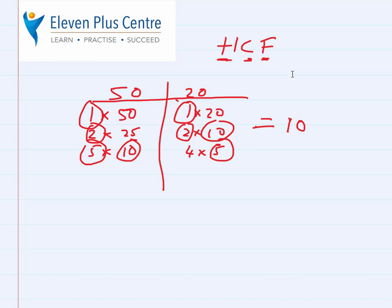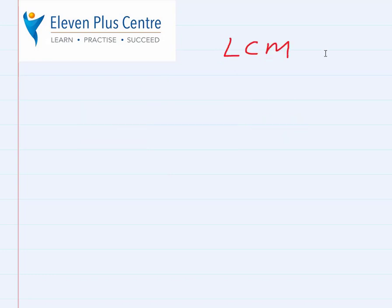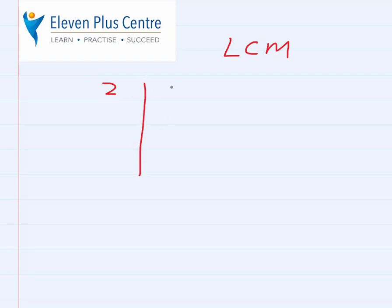Okay, that's quite straightforward. Now let's move on to lowest common multiple — LCM. Let's look for the LCM of 2 and 5. The LCM is the lowest common multiple. If you remember, multiples are those numbers that are in the multiplication table of the number.